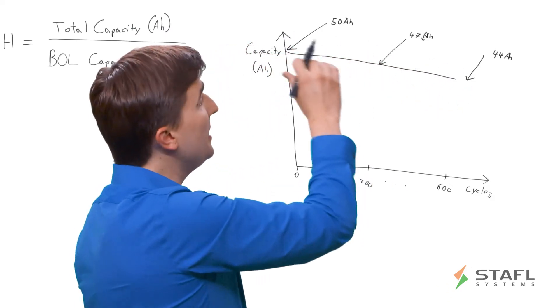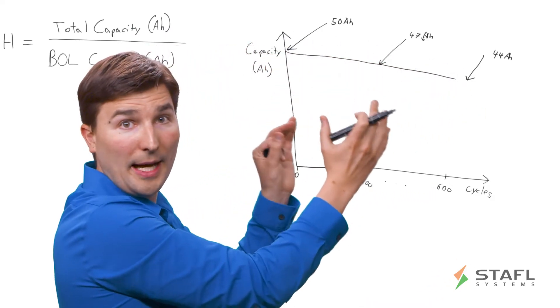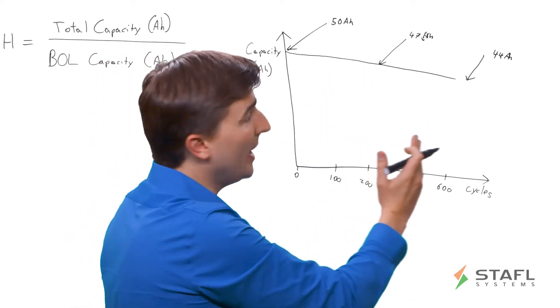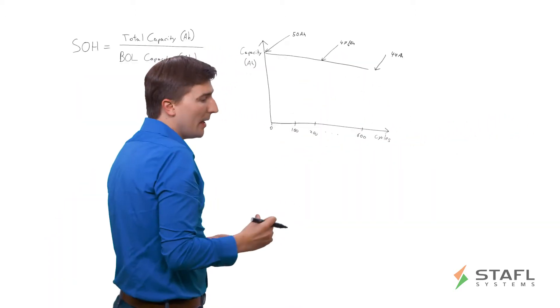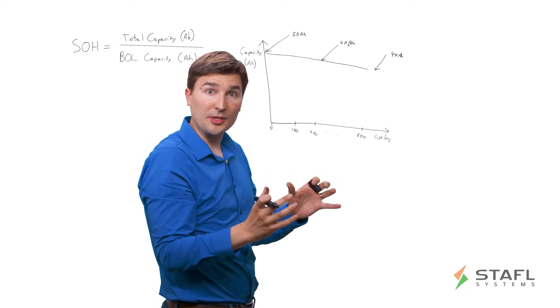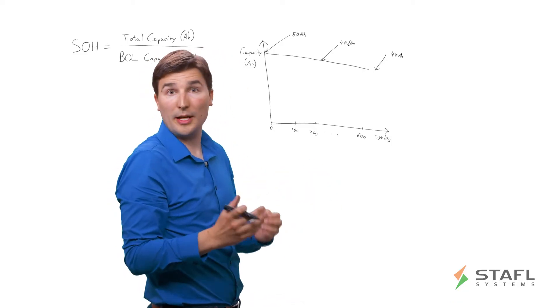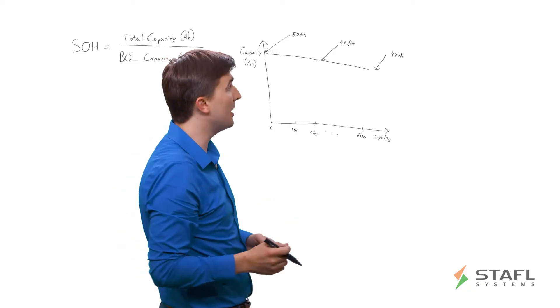So this forms a curve, a decreasing curve of the total amount of capacity that you can store in that battery pack on each cycle as you age the pack. And so that is the primary definition of state of health. However, there are a few other definitions or flavors of state of health that are very important to understand as well.